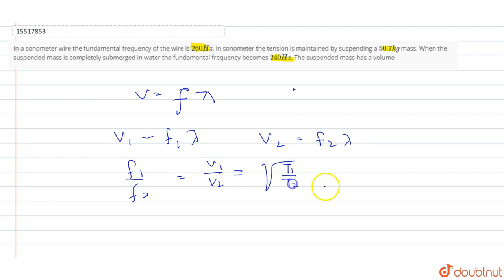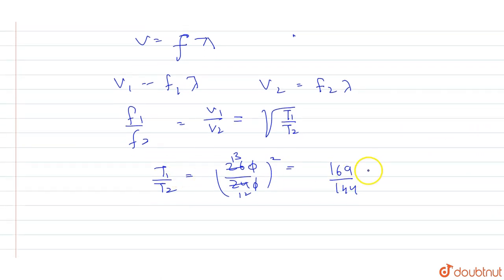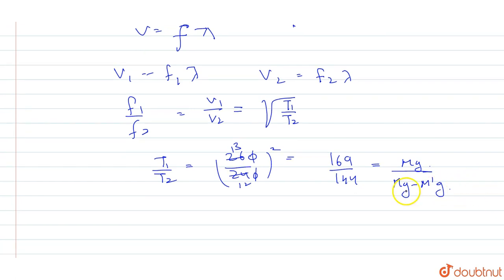So we get 260 divided by 240 squared, which gives us 169 by 144, which is T1 upon T2. Now T1 is mg and T2 is mg minus the buoyant force from the water.